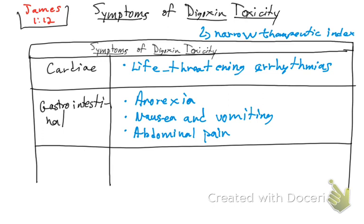So those are the gastrointestinal symptoms. As we mentioned in the cardiac system, the key symptom is life-threatening arrhythmia. Now we're going to look at the neurologic system.